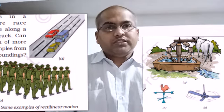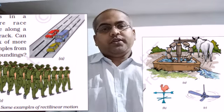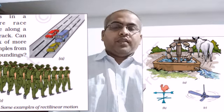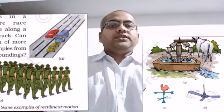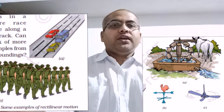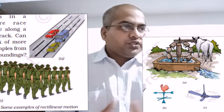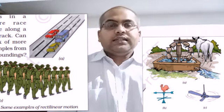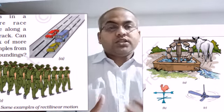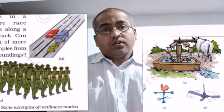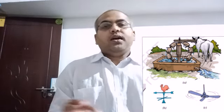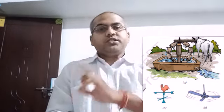Now comes the topic of motion. There are several types of motion in our day-to-day life. First, there is motion in a straight line, which is called rectilinear motion. There is also motion in a curved path, which is called curvilinear motion. And when a body moves in a circular path, that is called circular motion.